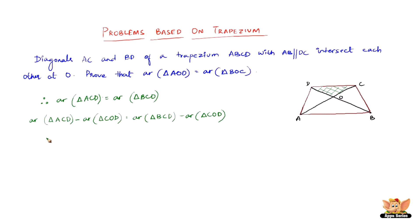Subtracting triangle COD from ACD, all we are left with is triangle AOD. And if we take out triangle COD from BCD, we have only triangle BOC left. Therefore, area of triangle AOD is proved to be equal to area of triangle BOC. Hence proved — this completes the problem.